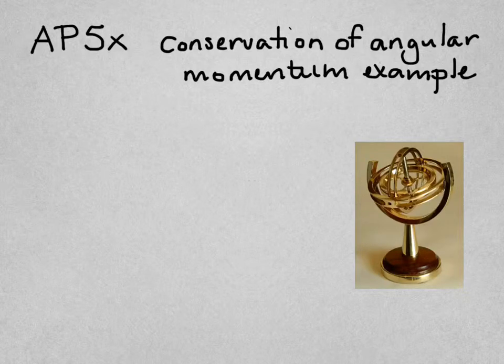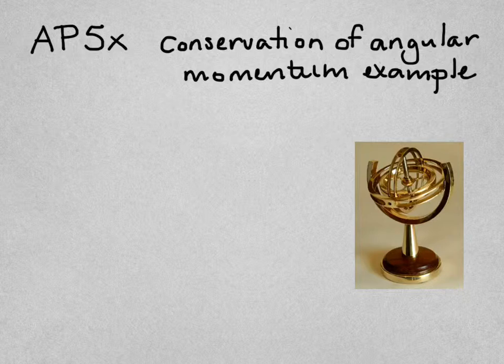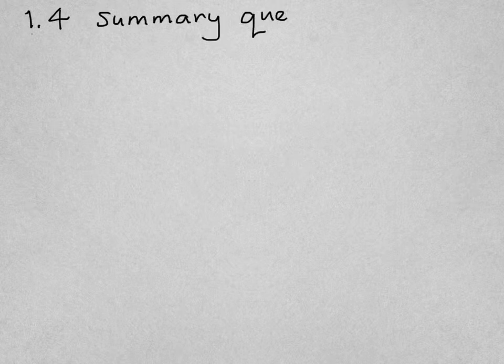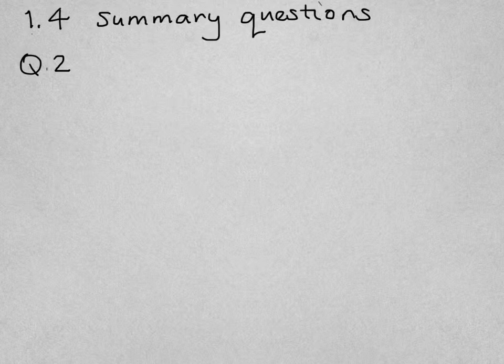This is an example of using the principle of conservation of angular momentum to solve a problem. It's from chapter 1.4 in the Applied Physics booklet, and I'm going to do question 2. The question says a metal disc X on the end of an axle rotates freely at 240 rpm.